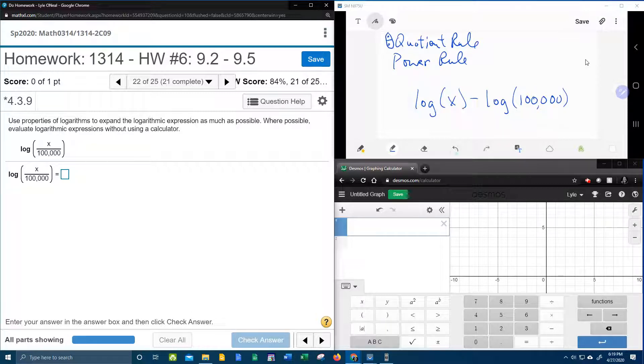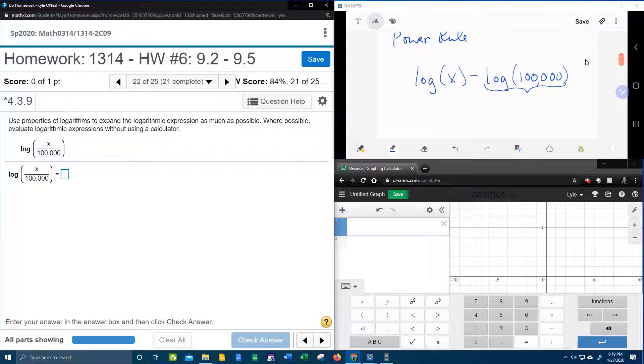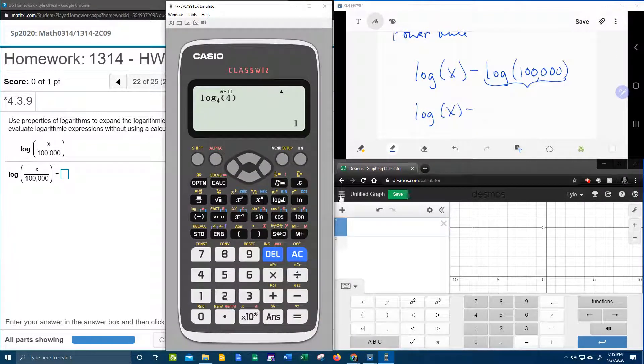Wait a second. This log is all numeric. There's no variables. That means it's probably going to simplify further. Let's grab our calculator.